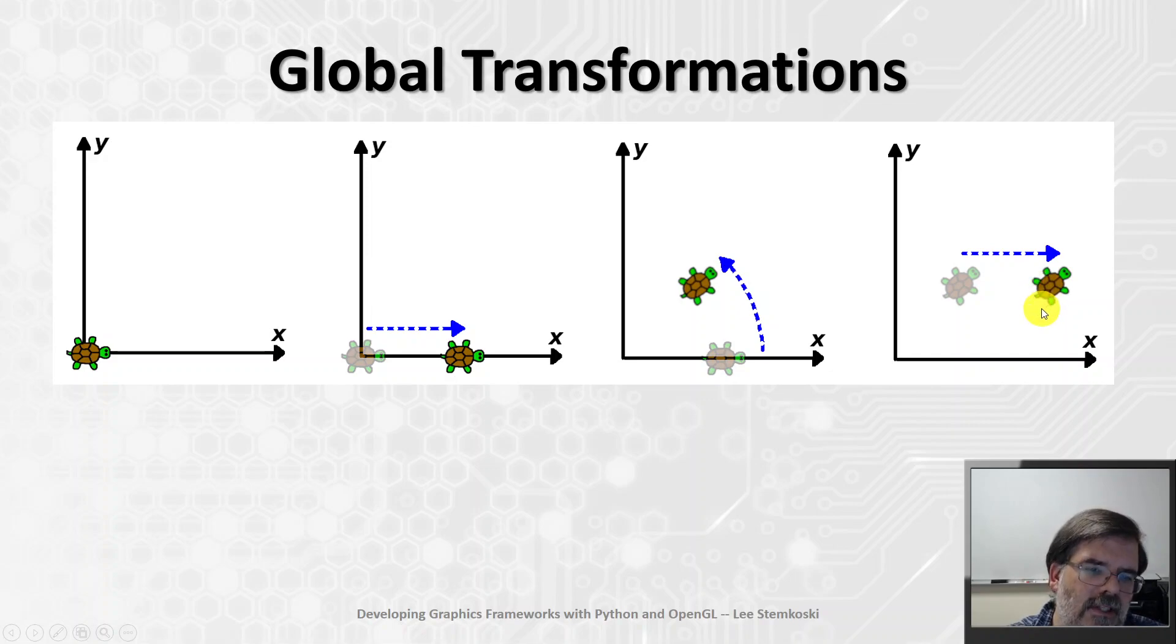Now, it's been kind of implicit, but we want to make it very clear and precise that all of these transformations are relative to some type of global coordinate system. There's always been some x-y axes in the background, and that aspect of these transformations we emphasize by calling them global transformations. Each of these objects is being moved with respect to these axes. Translation always means translation in the direction of the x-axis, whether you're in this location here or in this location here.